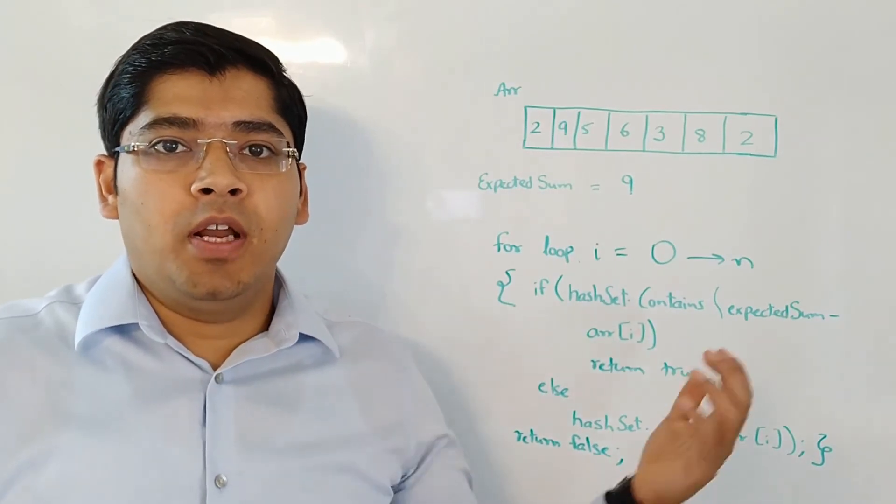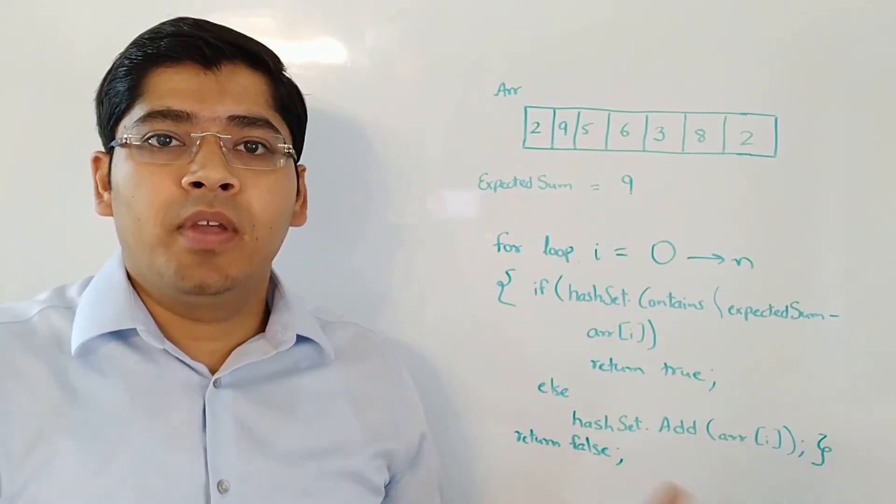And at the end of the for loop, if we never found such a number, such a pair, then we can return false.